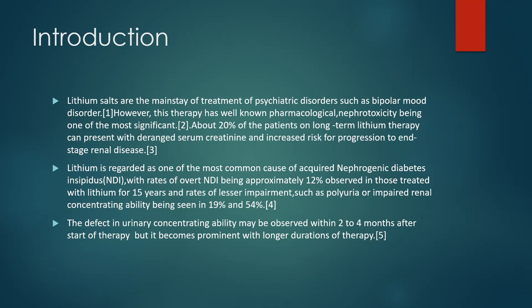Lithium is one of the most common causes of nephrogenic diabetes insipidus, with rates of overt NDI being 12% in patients treated with lithium for 15 years, and rates of lesser impairment such as polyuria or impaired renal concentrating ability seen in 19% and 54% respectively. The defect in urinary concentrating ability may be seen within 2 to 4 months after initiation of therapy but becomes more prominent as duration of therapy progresses.